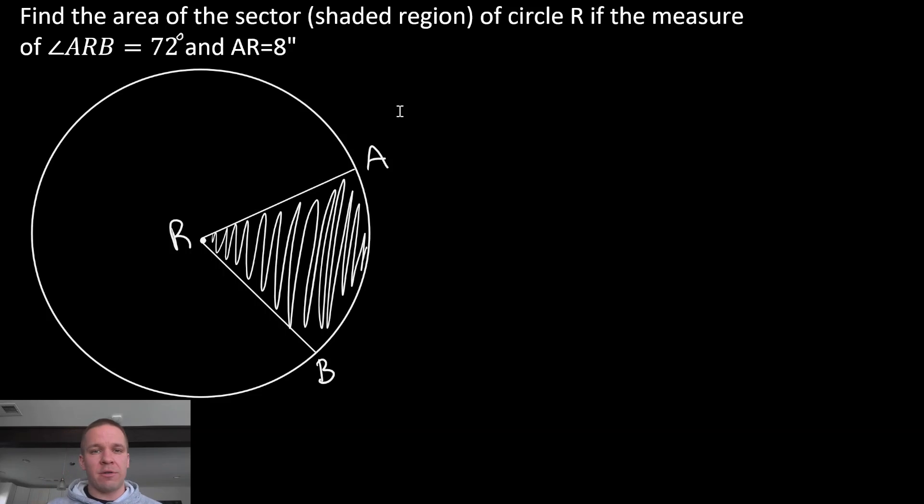Now there are formulas for the sector of the circle, different ways of writing it. I personally like a proportion when I'm setting this up. So there's my generic proportion. We have the arc measure over 360, and remember my arc measure is equal to the central angle, so in this case, the 72 will replace that.